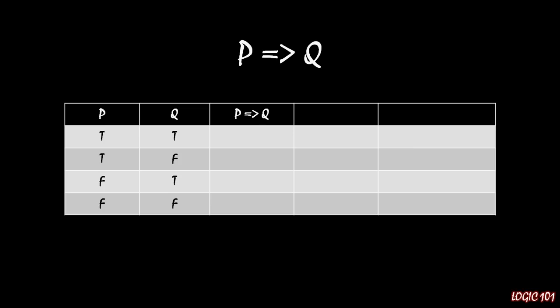Here we have one more column to fill in, and it's a conditional. If you remember back to our first lecture when I introduced conditionals, the conditional is true if the antecedent is true and the consequent is true as well, or if the antecedent is false. The only way that an implication is false is if the antecedent is true and the consequent is false. In the first row, both p and q are true, so the implication is true. For the bottom two rows, the antecedent is false, so the implication is true. It's only in that second row where p is true but q, the consequent, is false — so p is not actually implying q.